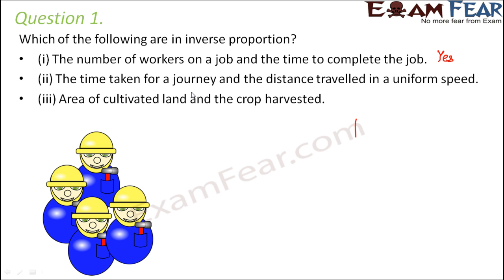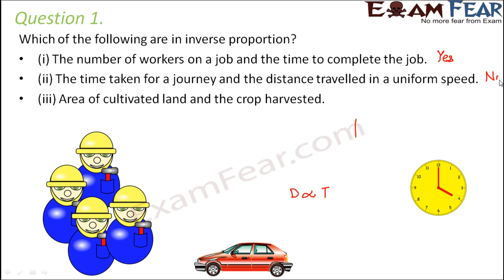The time taken for a journey and the distance travelled in a uniform speed. So now in a journey if the distance is not fixed, rather if the speed is uniform, then the car is always moving with the same speed. So the more distance it covers, the more time it will take. So distance is directly proportional to time taken. So this is not an inverse proportion.